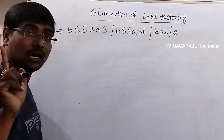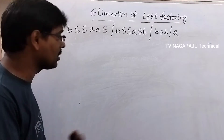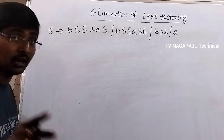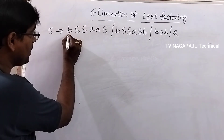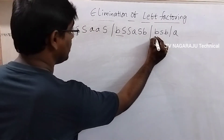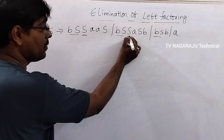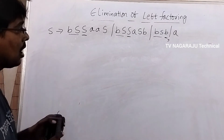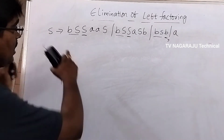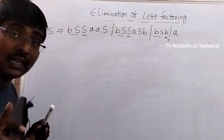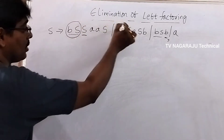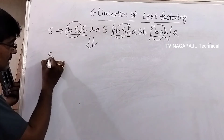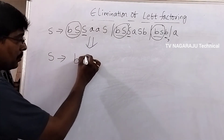The first step is identification of the common prefix. Terminals are not considered. Check: bS, bS, bS — we have S here, S here, but not in all. So the common prefix across all productions is bS. This — bS — is common to all the relevant productions.